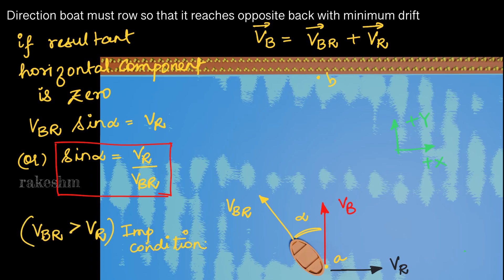Notice that sinα must be less than 1, so vr divided by vbr must be less than 1, meaning vr must be less than vbr. This means zero drift is possible only if the velocity of the boat with respect to the river is greater than the velocity of the river. Otherwise, the zero drift condition is not possible.